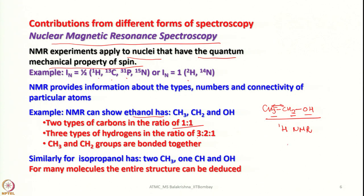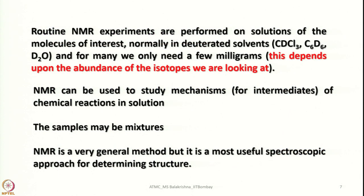Similarly, for isopropanol, ¹H NMR reveals two methyl groups, one CH group, and one OH group. Routine NMR experiments are performed on solutions in deuterated solvents such as CDCl₃, C₆D₆, D₂O, or even acetonitrile-d₃ (CD₃CN), and for many molecules we only need a few milligrams. About 10% of NMR-active nuclei should be present in the sample.